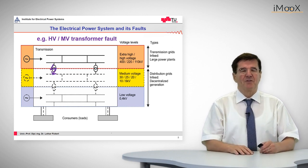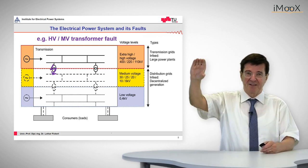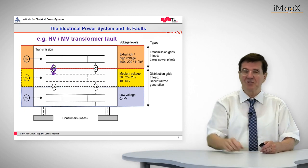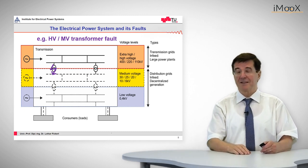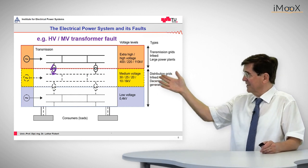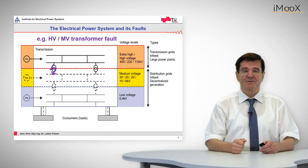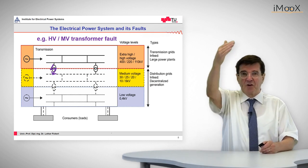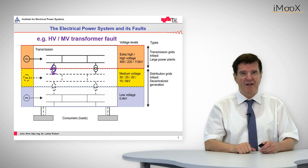The next type of faults occurs in the transformers between voltage levels, for example between the transmission and distribution level. If such a transformer fails, we have redundant structure. As you can see, there are two transformers, so the transport of electricity from high voltage to consumer voltage levels is not severely impaired.